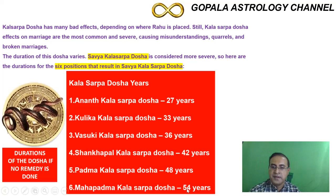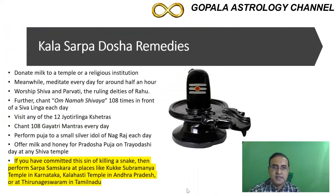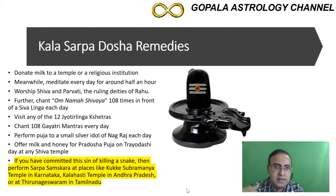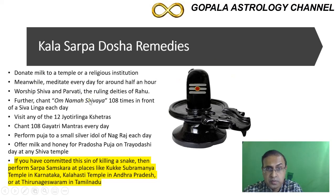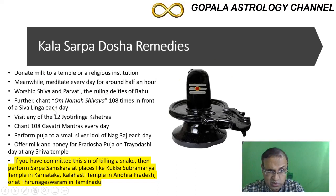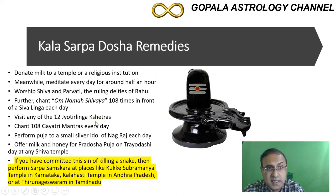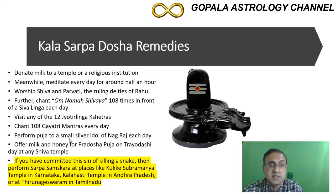Once you take the remedy and corrective actions, the ill effects of all these Kala Sarpa Doshas will be reduced. The remedies include: praying to Lord Shiva, donating milk at the temple, meditating for around half an hour in the name of Lord Shiva, and chanting 'Om Namah Shivaya' 108 times in front of a Shivalinga every day — this will drastically reduce Kala Sarpa Dosha. Visiting any of the 12 Jyotirlinga Kshetras or shrines in India also brings down the dosha to a significant level.